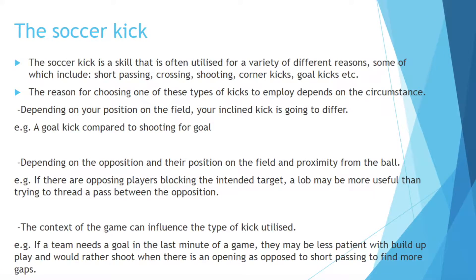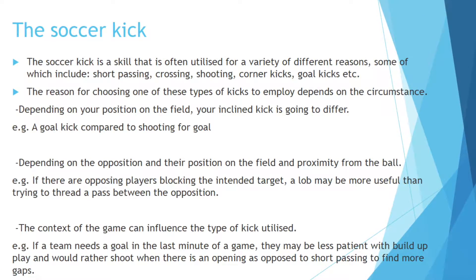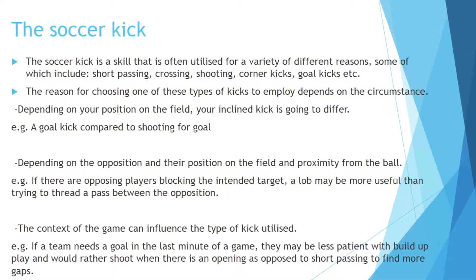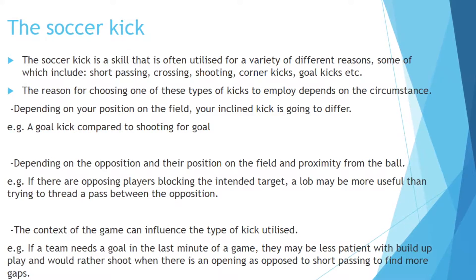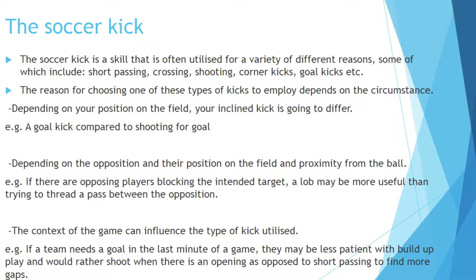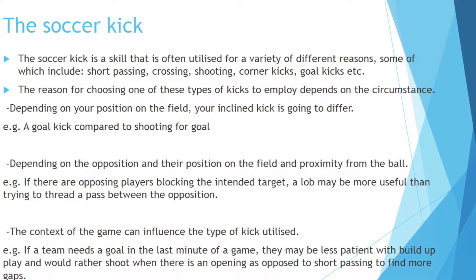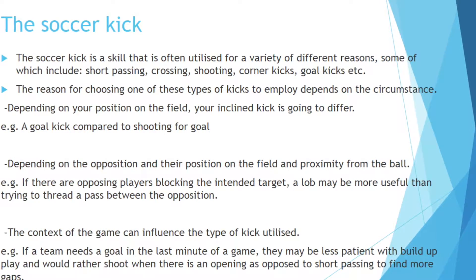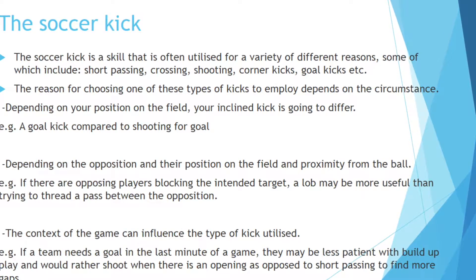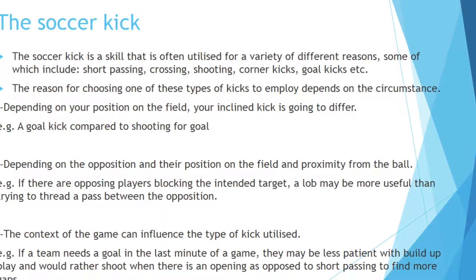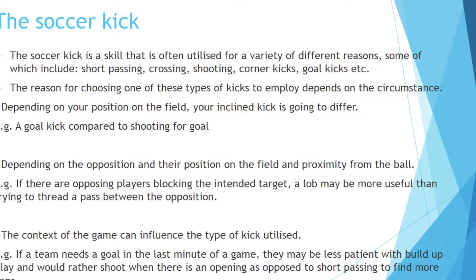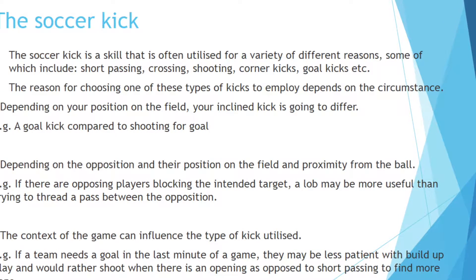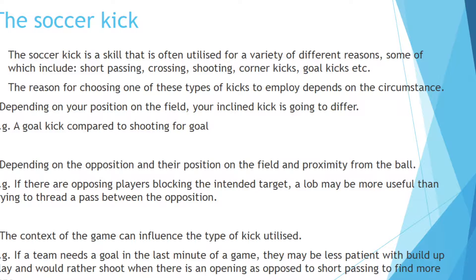For example, compare a goal kick to shooting for goal. Also, depending on the opposition and their position on the field and proximity to the ball — if an opposing player is blocking the intended target, a lob may be more useful than trying to play a pass to them. Also, the context of the game can influence the type of kick utilised. For example, if the team needs a goal in the last minute of a game, they'll be less patient with build-up play and would rather shoot when there's an opening than short passing to find gaps.